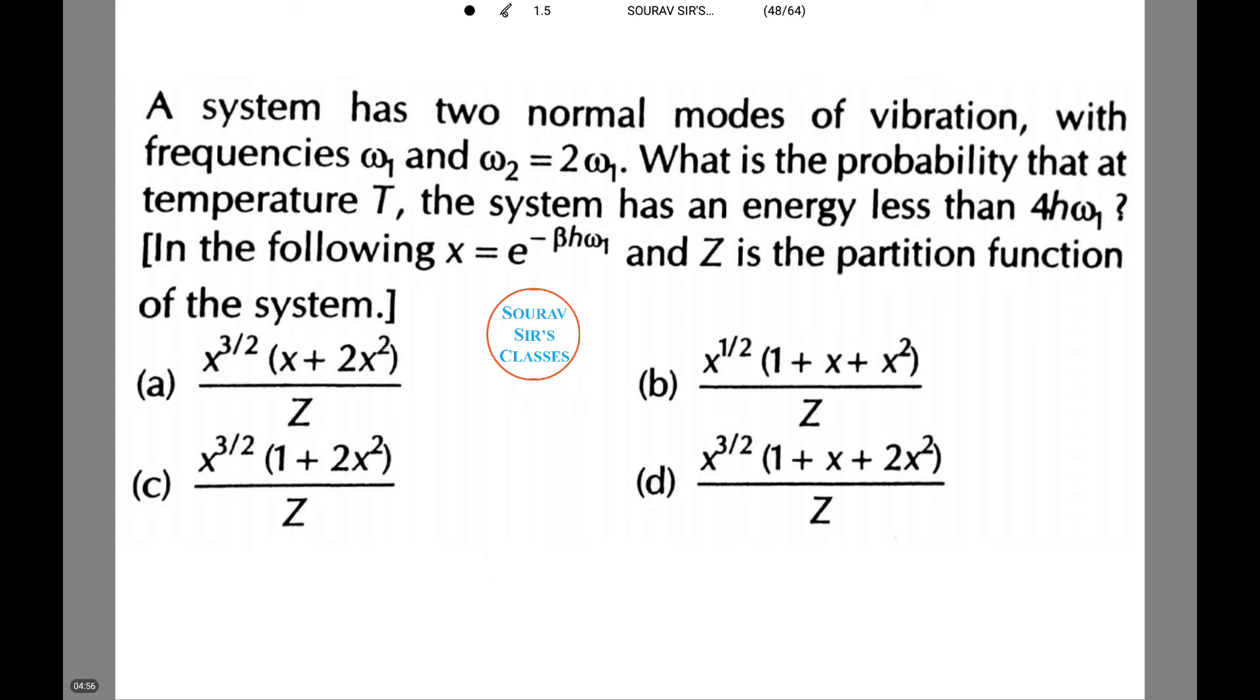The next question is very important. A system has two normal modes of vibration with frequency omega 1 and omega 2 equals 2 omega 1. What is the probability that at temperature T the system has an energy less than 4h omega 1? In the following x equals e to power minus beta h omega 1 and Z is the partition function of the system.